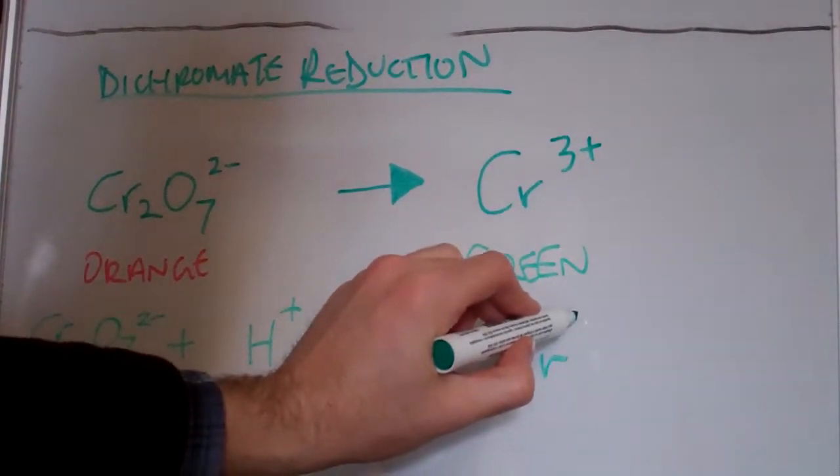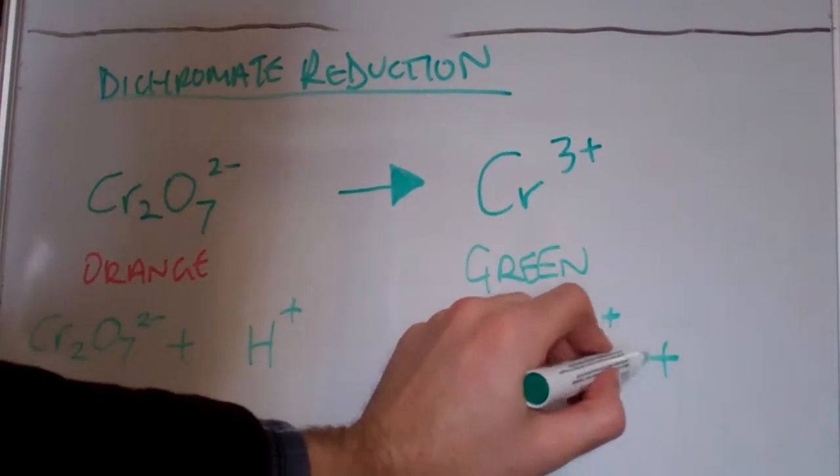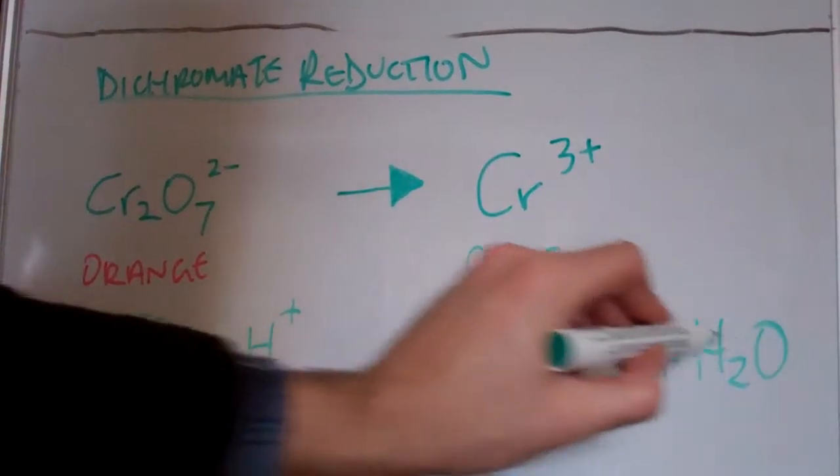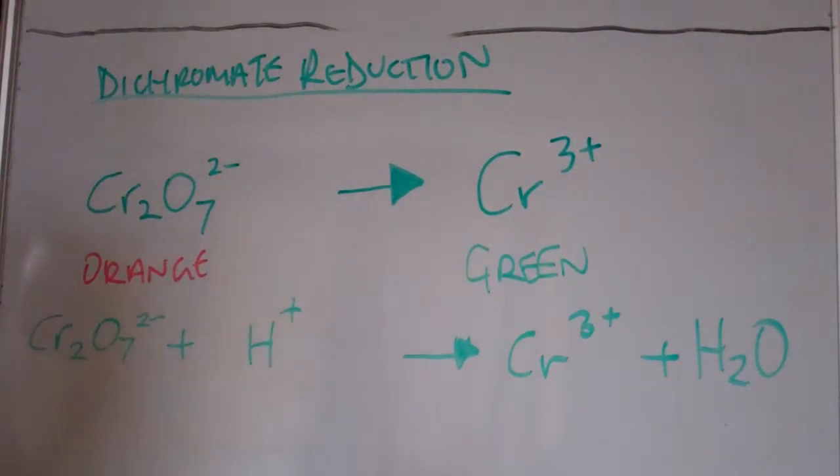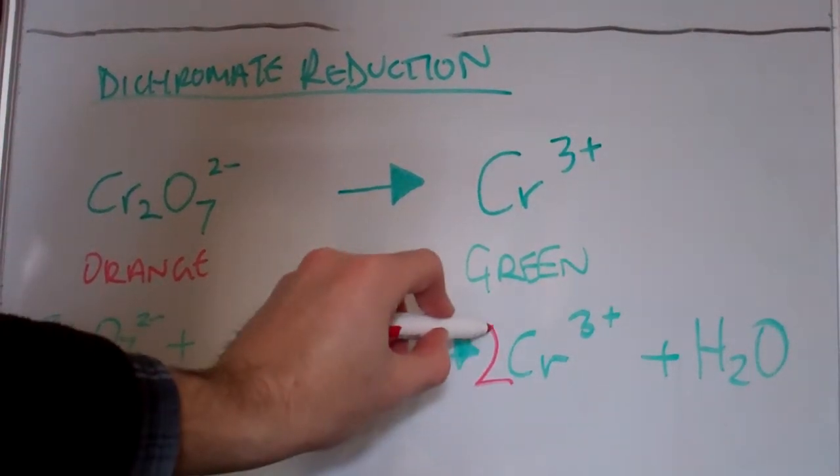Our products are chromium 3 and water. Okay, so all we need to do is balance this equation and balance the charge. We've got two chromiums on the left hand side so we need to have two chromiums on the right hand side.